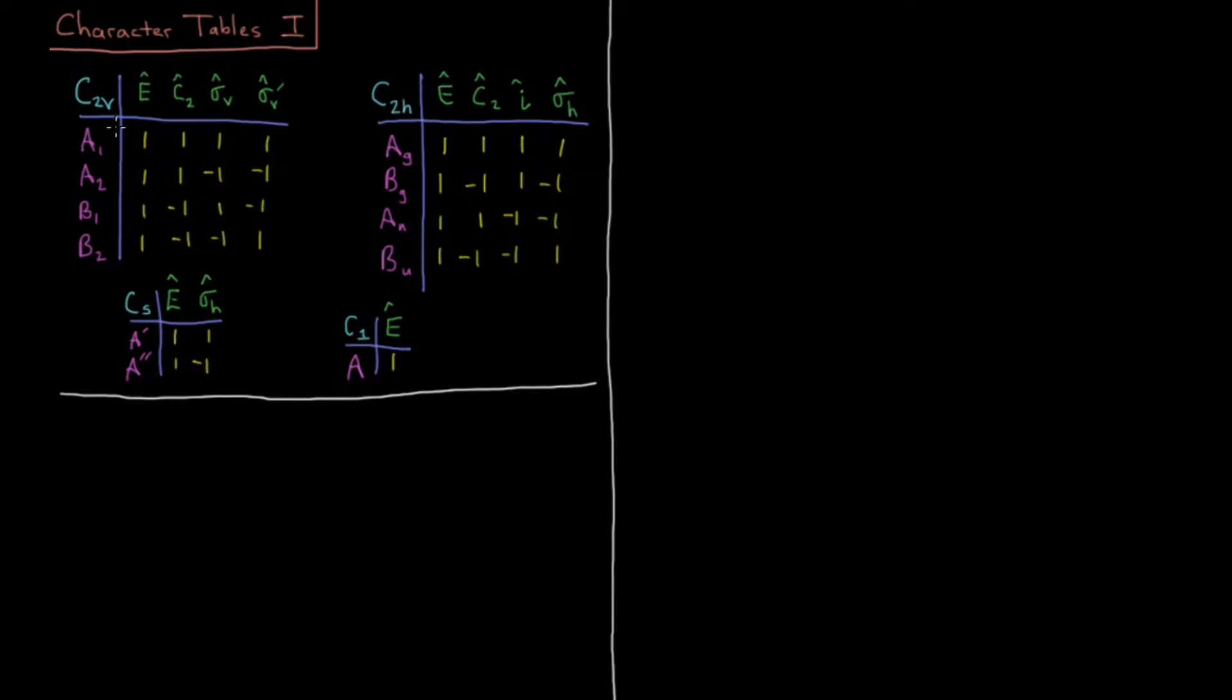There is a character table for every point group, and that character table indicates the character of every symmetry operator with respect to each irreducible representation of the group. So to start off, we're going to say where do these labels come from for these A's and B's and 1's and 2's and G's and U's, prime, double prime, etc.